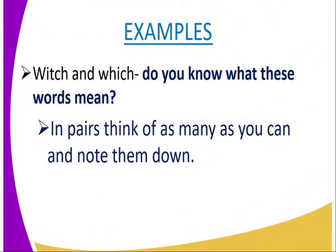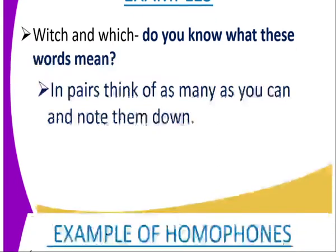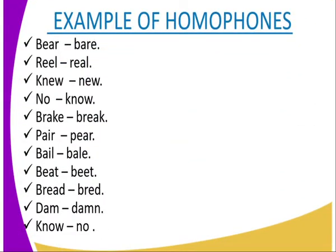For example, the words 'witch' and 'which.' These are two words with different meanings, but if you pronounce them, they have the same pronunciation. The first word, 'witch,' means someone who is evil, whereas the second word, 'which,' is a term we use to ask a question. But if we pronounce them, they sound the same — that is what makes them homophones.